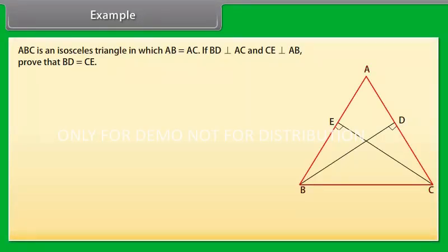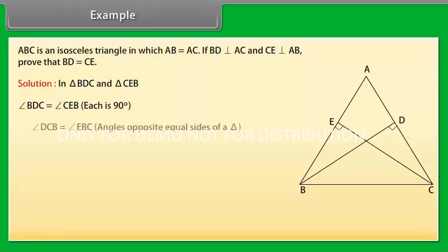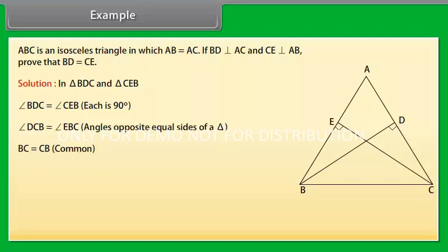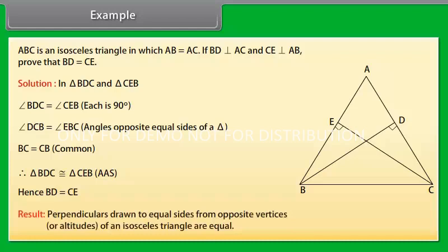ABC is an isosceles triangle in which AB equals AC. If BD is perpendicular on AC and CE is perpendicular on AB, prove that BD equals CE. Solution: In triangle BDC and triangle CEB, angle BDC equals angle CEB because each angle is 90 degrees. Angle DCB equals angle EBC because angles opposite equal sides of a triangle are equal. And BC equals CB because they are common. Therefore, triangle BDC is congruent to triangle CEB by AAS. Hence, BD equals CE. This example gives us the result that perpendiculars drawn to equal sides from opposite vertices — or altitudes of an isosceles triangle — are equal.